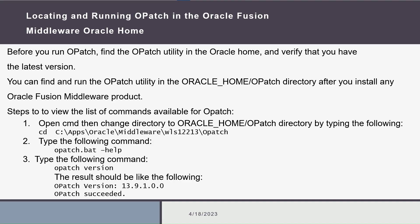The second prerequisite is to locate the installed OPatch utility and obtain its version. We will run the command prompt as administrator, then change the directory to the Oracle home OPatch directory by typing the appropriate command. Then type the following two commands to locate and obtain the OPatch version.